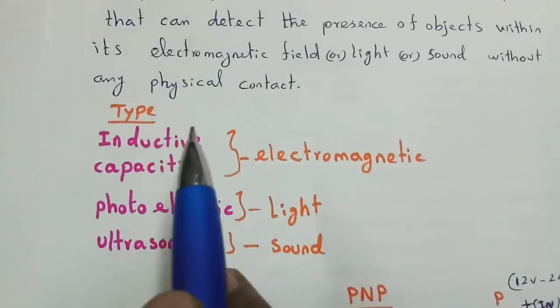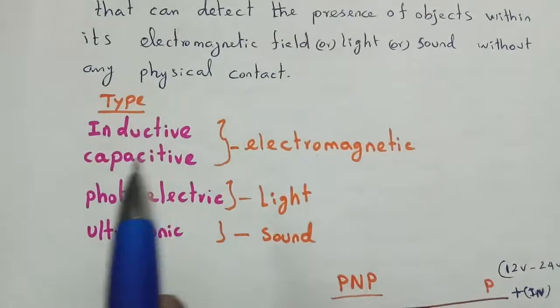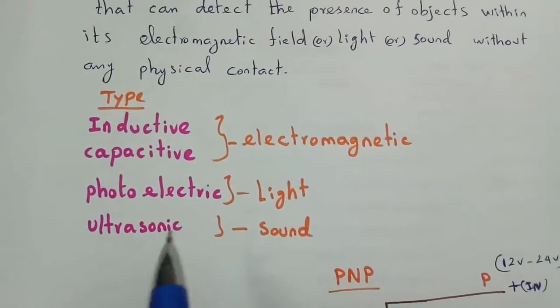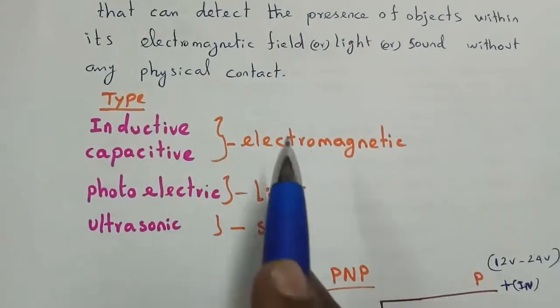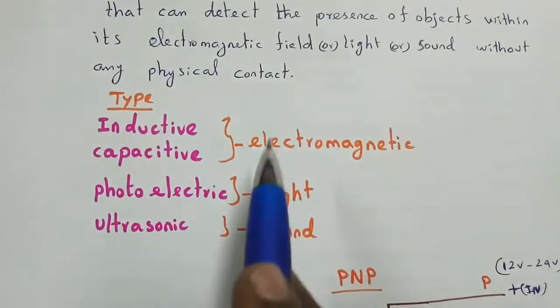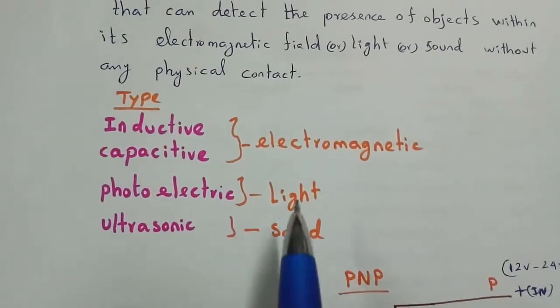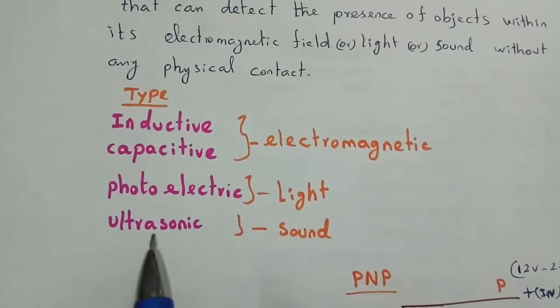This is the type of Proximity Sensor. Inductive type, capacitive type, photoelectric, ultrasonic. Inductive or capacitive use electromagnetic field. Photoelectric uses light, ultrasonic uses sound.